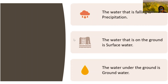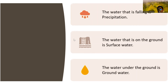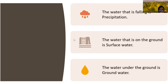There are three types of water based on availability: precipitation, surface water, and ground water. The water that is falling from the sky is precipitation. The water that is on the ground is surface water. The water found underground is ground water.